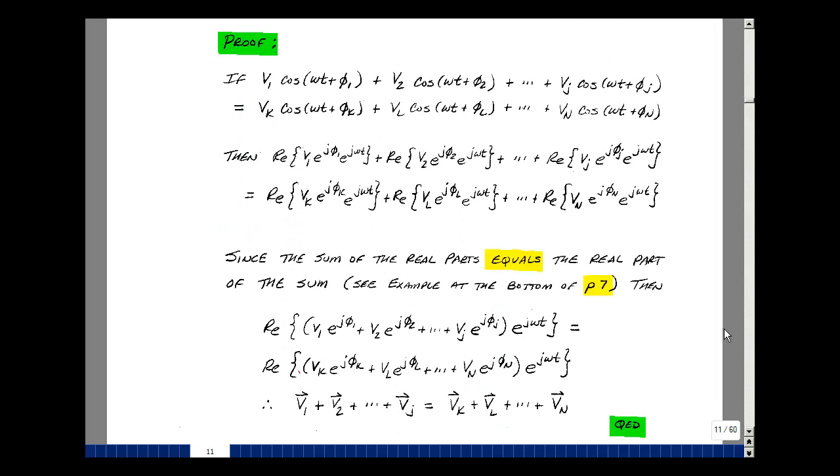The example we did on page 7 showed that the sum of the real parts equals the real part of the sum. So here I've got the sum of the real parts. I could write that as the sum and take the real part. But what's common to each term here is e to the j omega t. Same thing on the right-hand side of the equation, where I've got the summation here of the real parts. So let's take the summation of the voltages first and then take the real part of that.